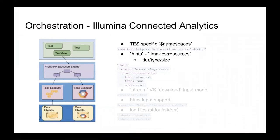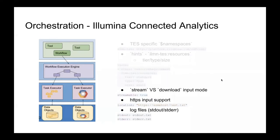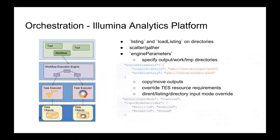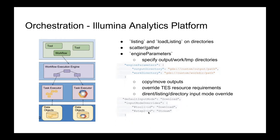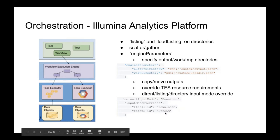In terms of technical details, we have managed to leverage common workflow language features via the Illumina platform, which uses task execution service specific namespaces and resources for instance type, tier, and size. Stream versus download for input modes are supported, as is HTTPS input support. Users can also specify or refer to log files of the workflows. Other orchestration features we have leveraged include using listing and load listing to allow putting files in the designated output directory prior to executing command line tools. Scatter and gather is possible. At launch time, engine parameters can specify output, work, or temp directories, or move and copy outputs between different locations. It is also possible to override task requirements or use direct listing or directory input mode overrides, such as specifying at launch time that one tool runs in download mode and another in stream mode.